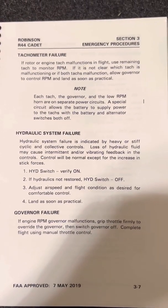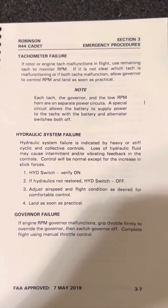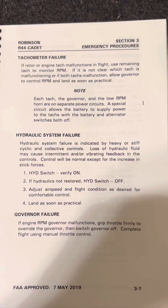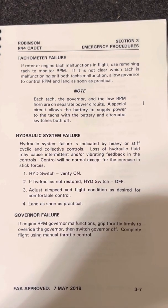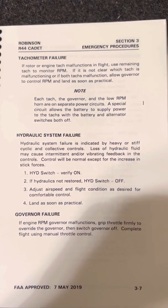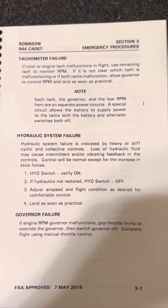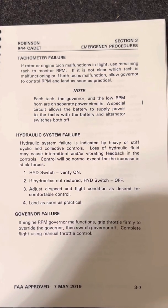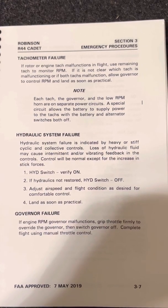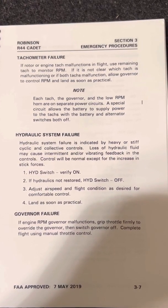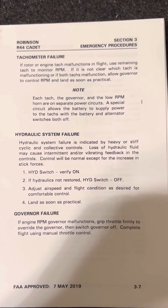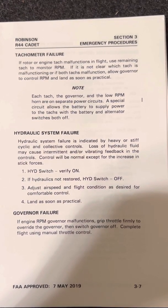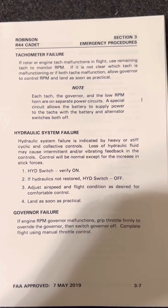Tachometer failure. If rotor or engine tachometer malfunctions in flight, use the remaining tachometer to monitor RPM. If it is not clear which tachometer is malfunctioning, or if both tachometers malfunction, allow governor to control RPM and land as soon as practical.